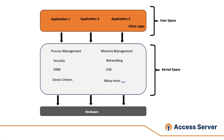Kernel space and user space refer to different regions in the memory layout of a computer's operating system. These are distinct areas utilized to run different types of software processes. Kernel space is the memory area where the core of the operating system runs and provides its services. This space is reserved for running the kernel, kernel extensions, and most device drivers.